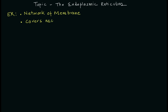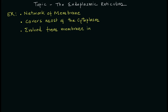The endoplasmic reticulum covers most of the cytoplasm of the cell, meaning its network is huge. It is believed to have evolved from membrane infoldings — when the outer membrane got infolded, it formed these different kinds of structures. That is the hypothesis.